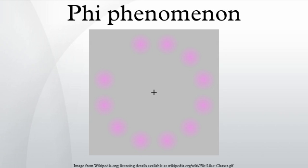Finally, from a lag of around 200 milliseconds in the original study onwards, the two lines are perceived to occur in succession — first A, then B.